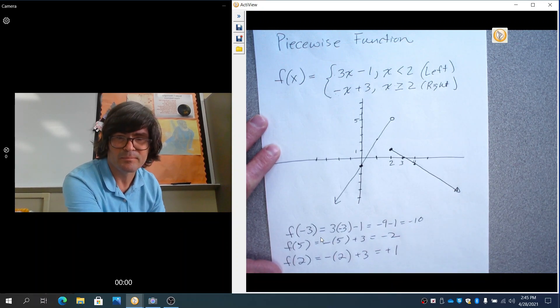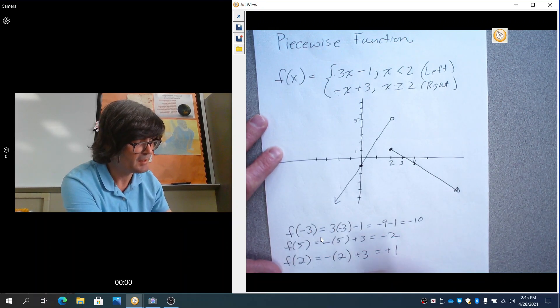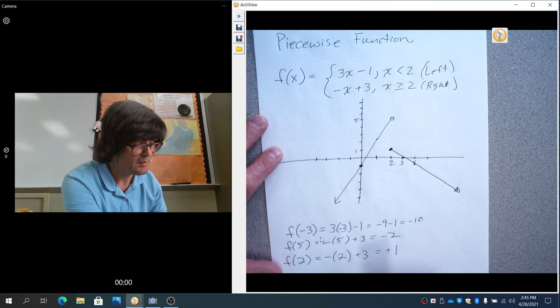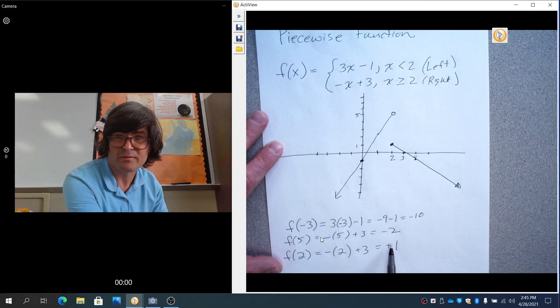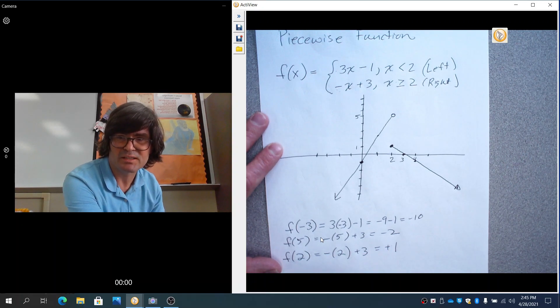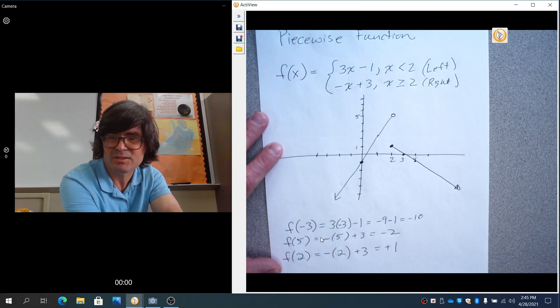So the point negative 3 comma negative 10 is on the graph. 5 comma negative 2 is on the graph. And finally, 2 comma 1 is on the graph. So that's what a piecewise function is. I hope this helped, and I'll see you again soon.